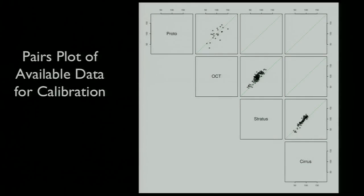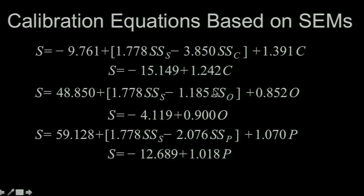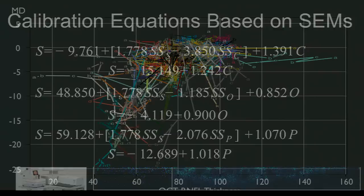So here you can see pairs of plots between prototype and OCT 1.2, OCT 1.2 and Stratus, and Stratus and Cirrus. And these are the lines of equality. And if you want to jot these down, this would be a good time. These are the calibration equations that we used in this study. I hope you all got that.